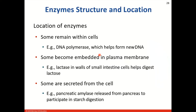What are some of the locations of our enzymes? Some are going to remain within the cells — for example, DNA polymerase, which helps form new DNA molecules during DNA replication. Some enzymes become embedded in the plasma membrane — for example, lactase in the walls of the small intestines, which is going to help digest lactose. Notice the -ASE suffix in the name. Then we also have enzymes that are secreted from the cell — for example, pancreatic amylase is released from the pancreas and helps participate in starch digestion.